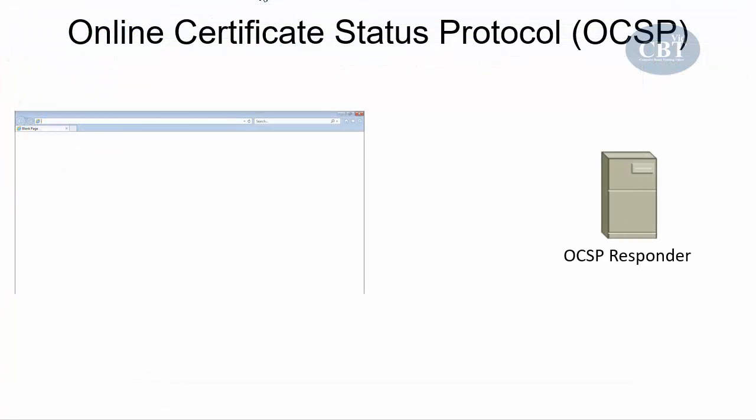The second technology is the online certificate status protocol (OCSP), which performs real-time lookup of certificate status. The browser sends a request to an OCSP responder — a server that holds certificate information — and the server immediately replies with the status of that certificate. The problem with OCSP is that your machine must be online; if it's not, the browser can't check the certificate's status. That's why many modern browsers like Google Chrome are switching back to the certificate revocation list.